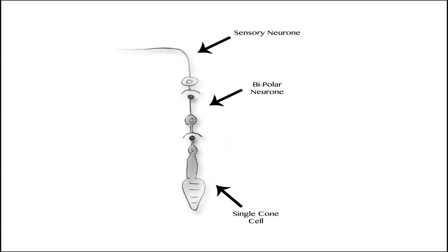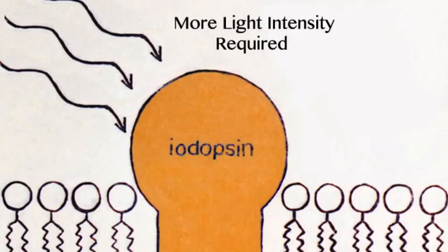Additionally, cone cells have the pigment iodopsin, which breaks down at higher intensities of light than rhodopsin. The breakdown of this pigment is required in order to create a generator potential which creates an impulse.